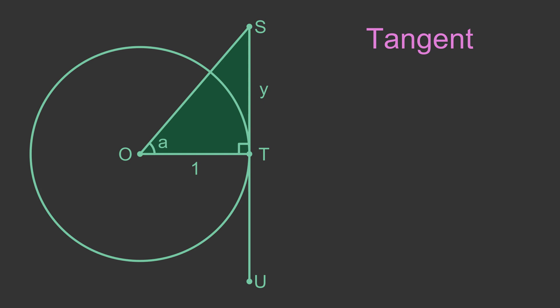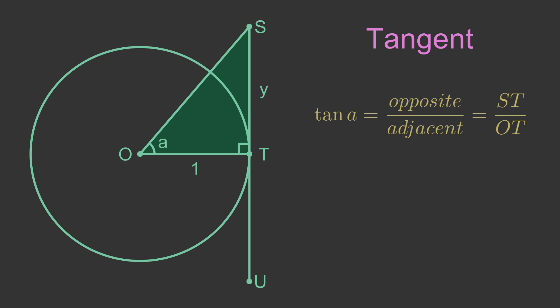This triangle TOS is not quite the same as the one we drew for the sine function. The previous triangle had a hypotenuse of length 1. This triangle has the side OT adjacent to the angle A of length 1. The opposite side ST has length Y. The diagram also shows a tangent to the circle, the line SU. ST is part of that tangent line. The definition of the tangent function is opposite over adjacent, which is ST over OT. Substituting the values of Y for the opposite and 1 for the adjacent gives Y over 1, which simplifies to Y. So tan A tells us the length Y, which is the length of the side of the triangle ST that makes up part of the tangent SU. We call it the tangent function because of this.